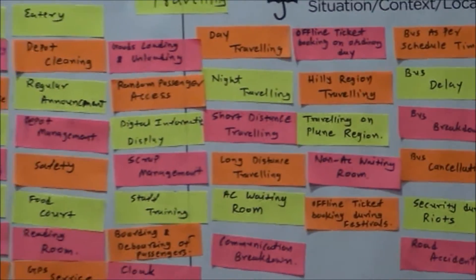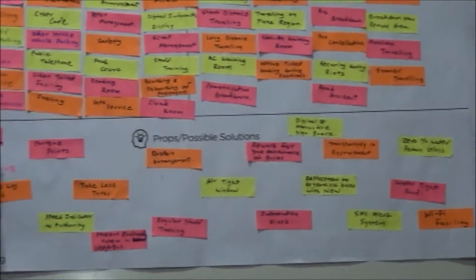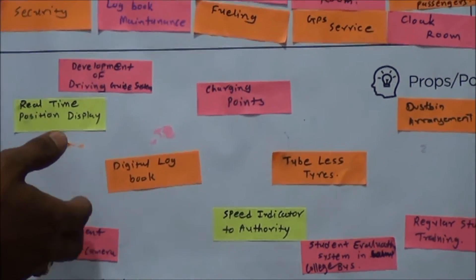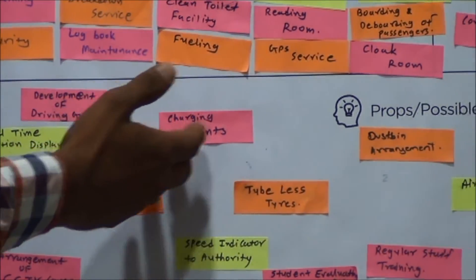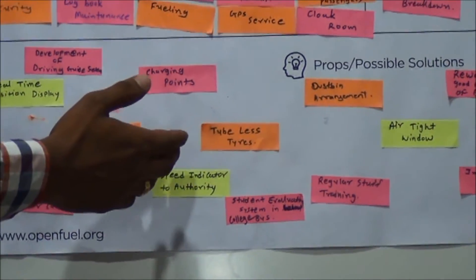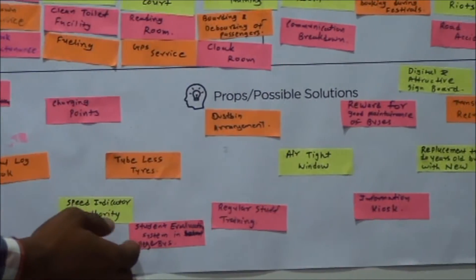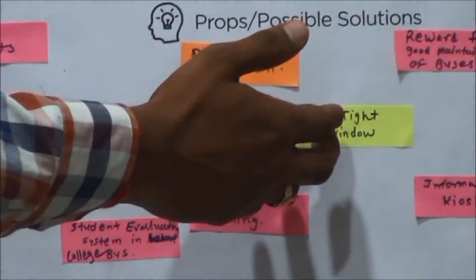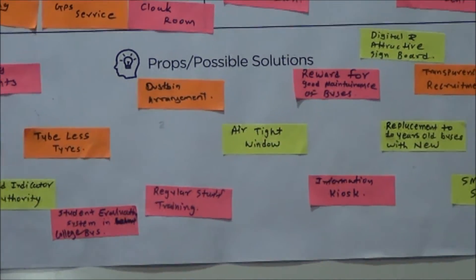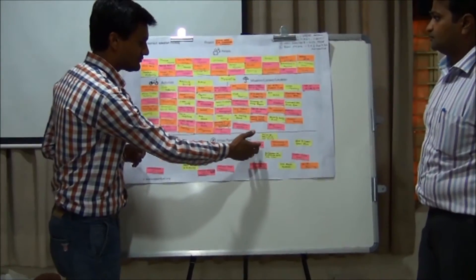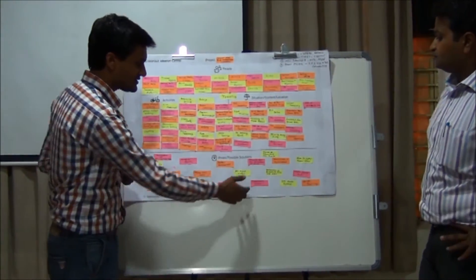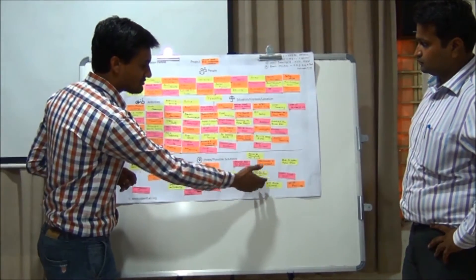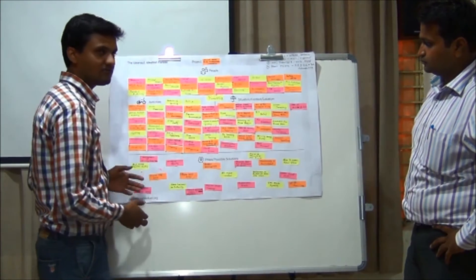According to these situations, the possible problems and solutions include: development of driving guidance systems, real-time position display, arrangement of CCTV cameras in buses and depots, digital logbook maintenance, charging points in buses, speed indicator to authority, tubeless tyres, dustbin arrangement in buses, student evaluation system for college buses, regular stations, regular staff training, airtight windows, reward for good bus maintenance by staff, information kiosk at bus depots, digital and attractive sign boards, replacement of buses at regular time periods, transparency in recruitment of staff, SMS alert system, water-repellent treatment for glass, and water trial groups and Wi-Fi facilities.